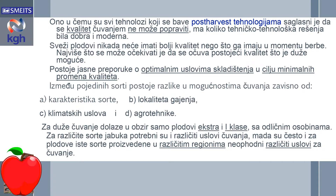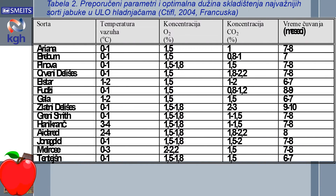Postoje jasne preporuke o optimalnim uslovima skladištenja u cilju minimalnih promena kvaliteta. Između pojedinih sorti postoje razlike u mogućnostima čuvanja, u zavisnosti od karakteristika sorte, lokaliteta gajenja, klimatskih uslova i primenjene agrotehnike. Za duže čuvanje dolaze u obzir samo plodovi ekstra i prve klase sa odličnim osobinama. Za različite sorte jabuke potrebni su i različiti uslovi čuvanja, mada su često i za plodove iste sorte, proizvedene u različitim regionima, neophodni različiti uslovi za čuvanje. U tabeli su date preporučene vrednosti parametara optimalnih dužina skladištenja najvažnijih sorti jabuka u ULO hladnjačama.